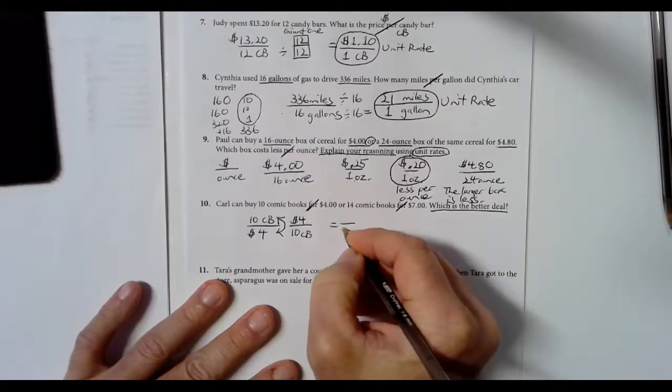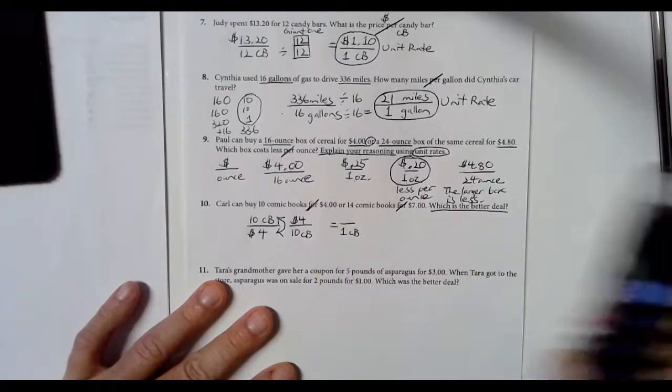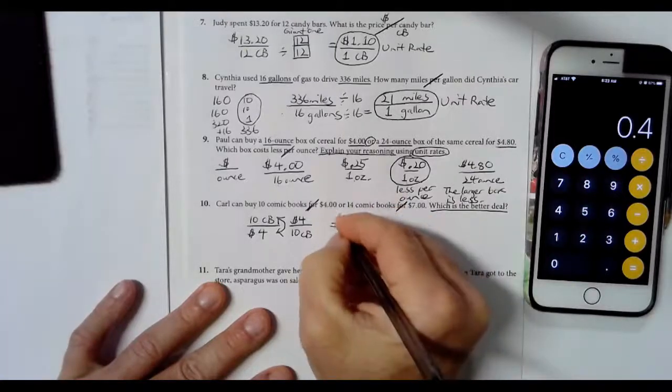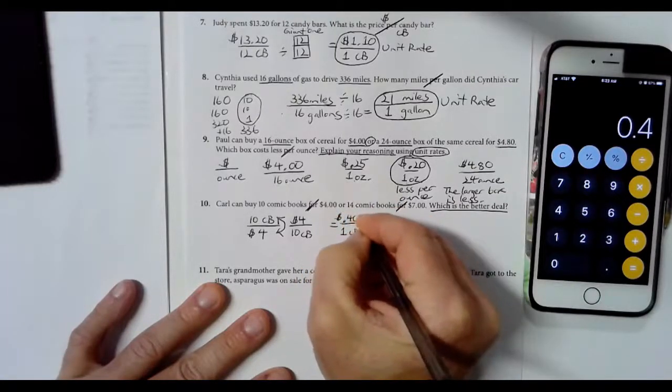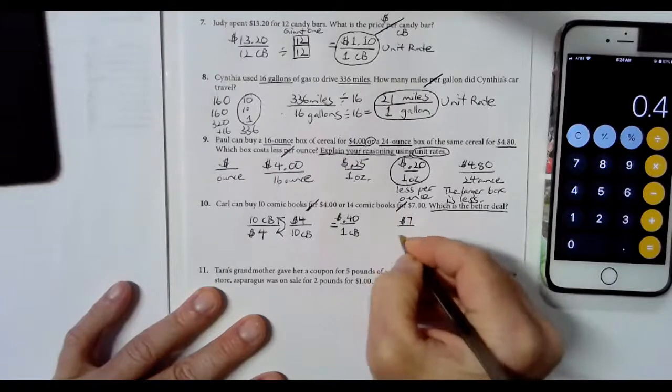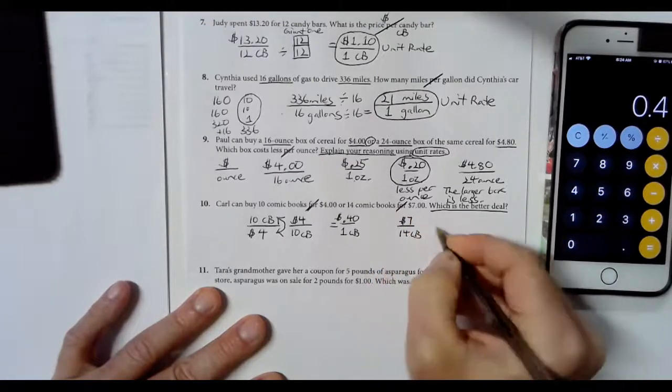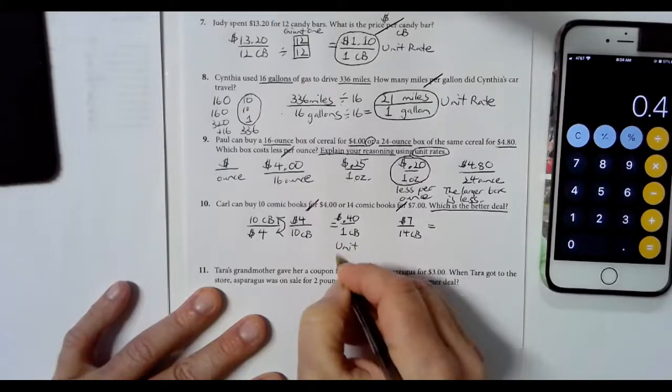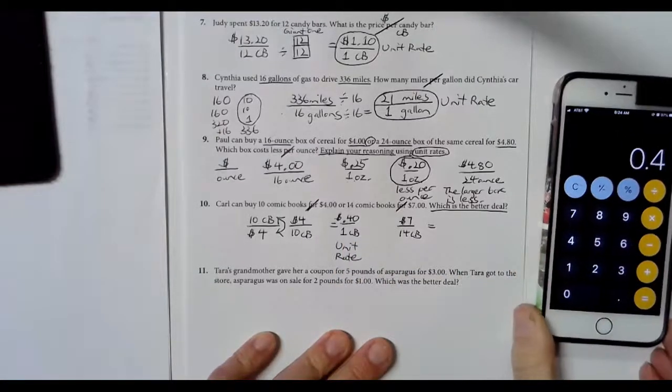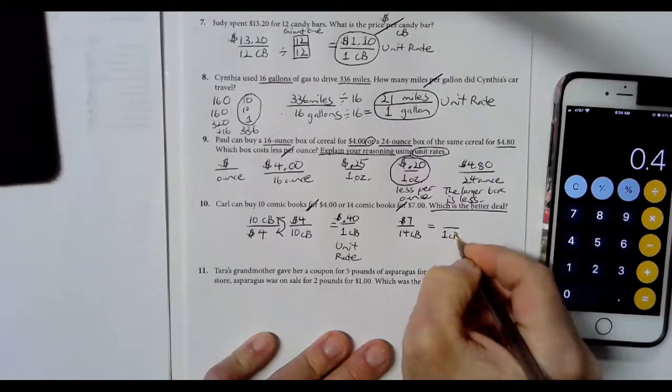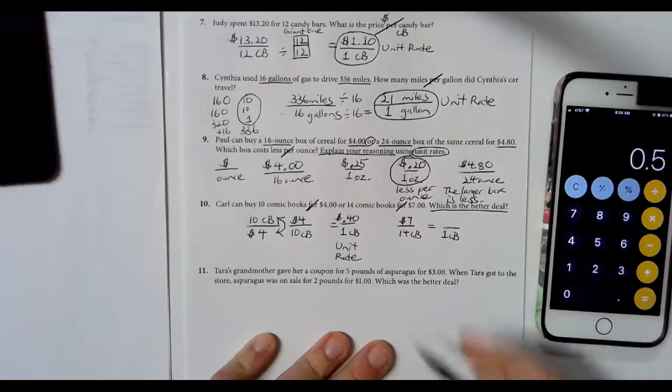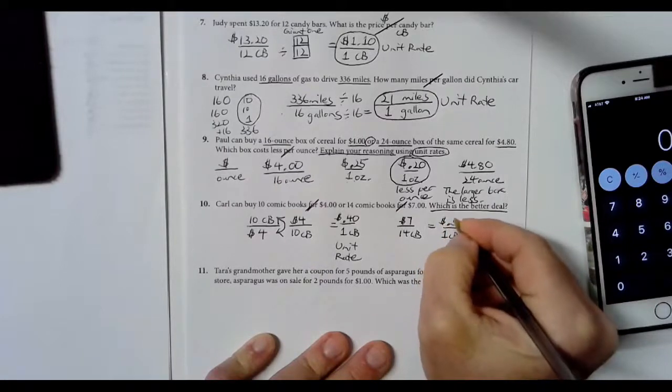We're trying to figure out $4 for 10 comic books would be how much for a single one. $4 divided by 10 comic books, well, 40 cents. You probably knew that, right? It's always good to check and make sure. Or he can get for $7, 14 comic books. Let's find that unit rate. We know it's a unit rate once again because there's a one in the denominator.